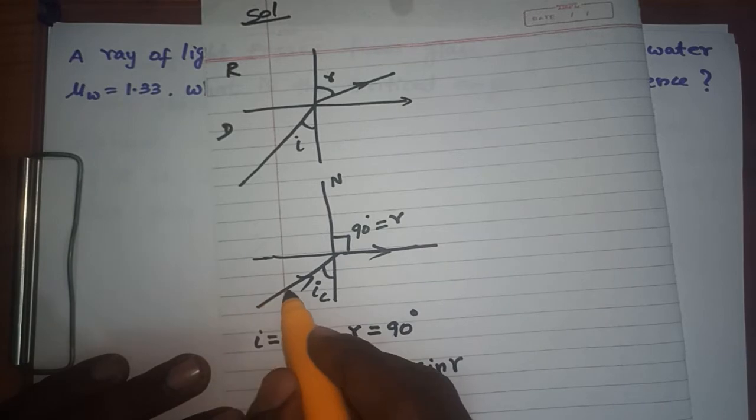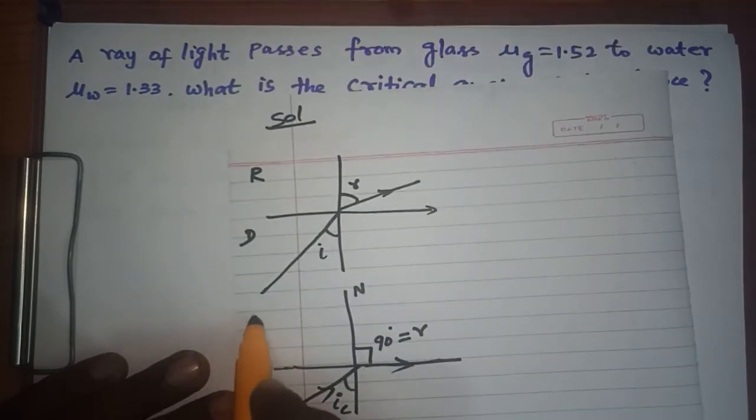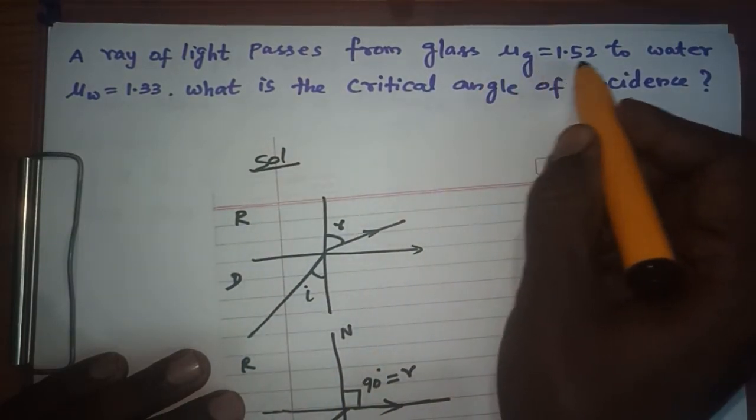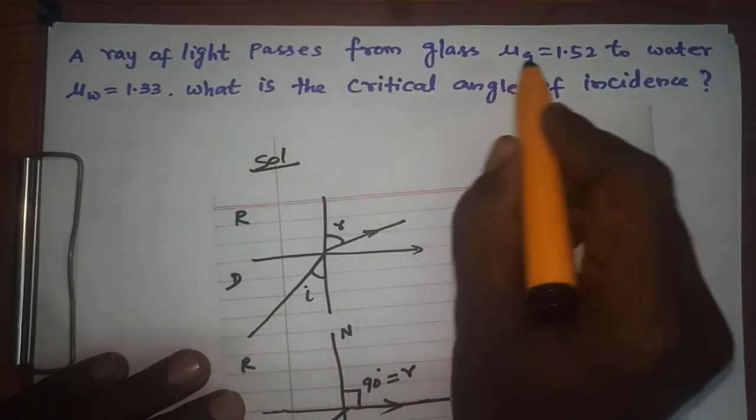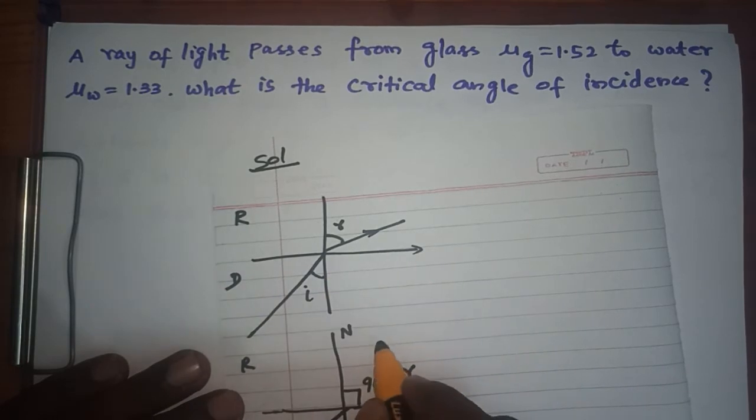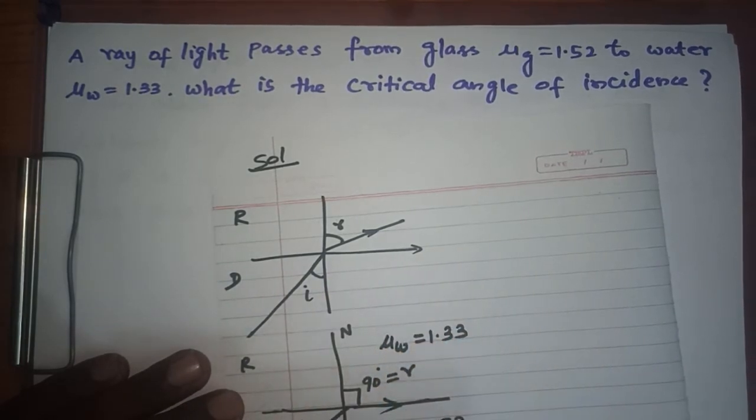You can do this with your refractive formula. Here they are given that this is your rarer and denser because it bends away from the normal. Denser medium means your refractive index is higher compared to glass refractive index. μ_g equals 1.52 and μ_w equals 1.33.